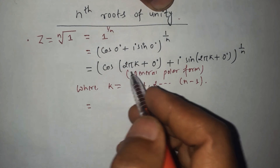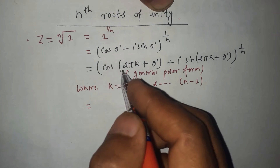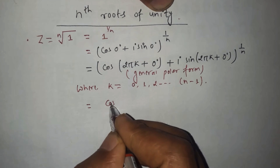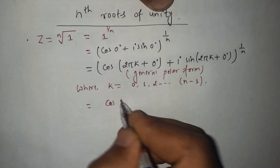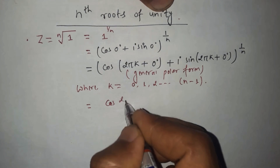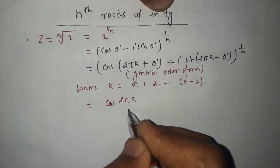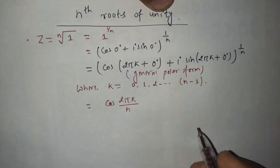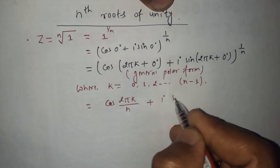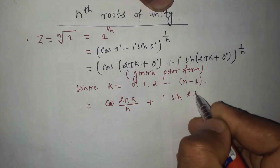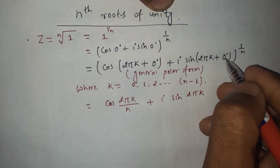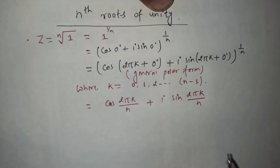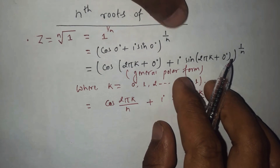Now we can use De Moivre's theorem. Applying it, this can be further written as cos(2πk/n) + i·sin(2πk/n). Here we just apply De Moivre's theorem on the complex number.